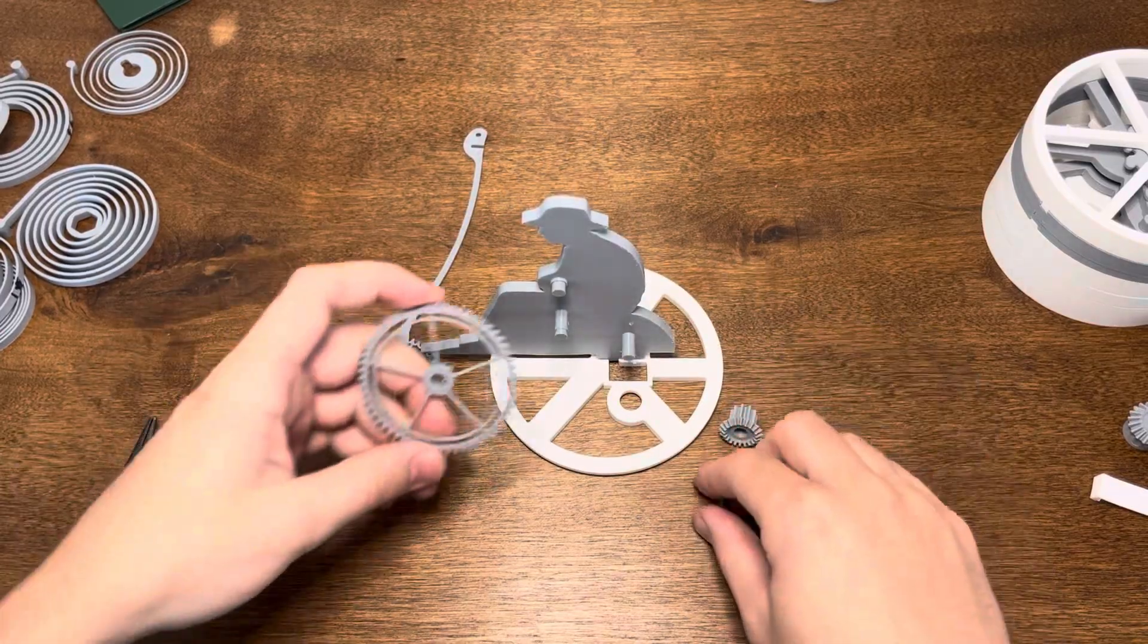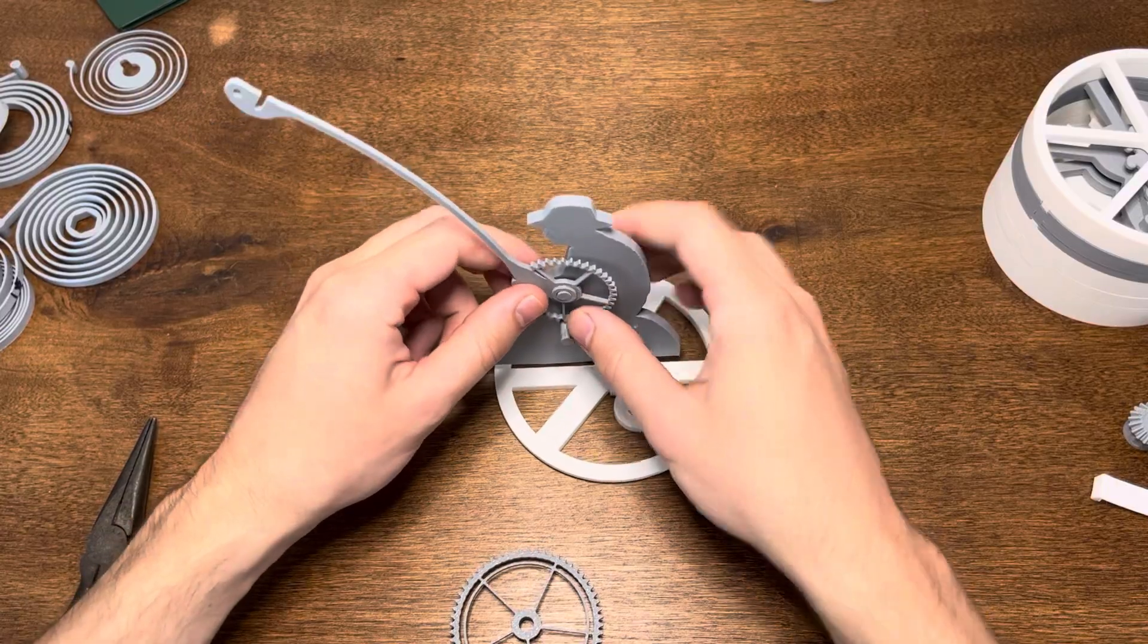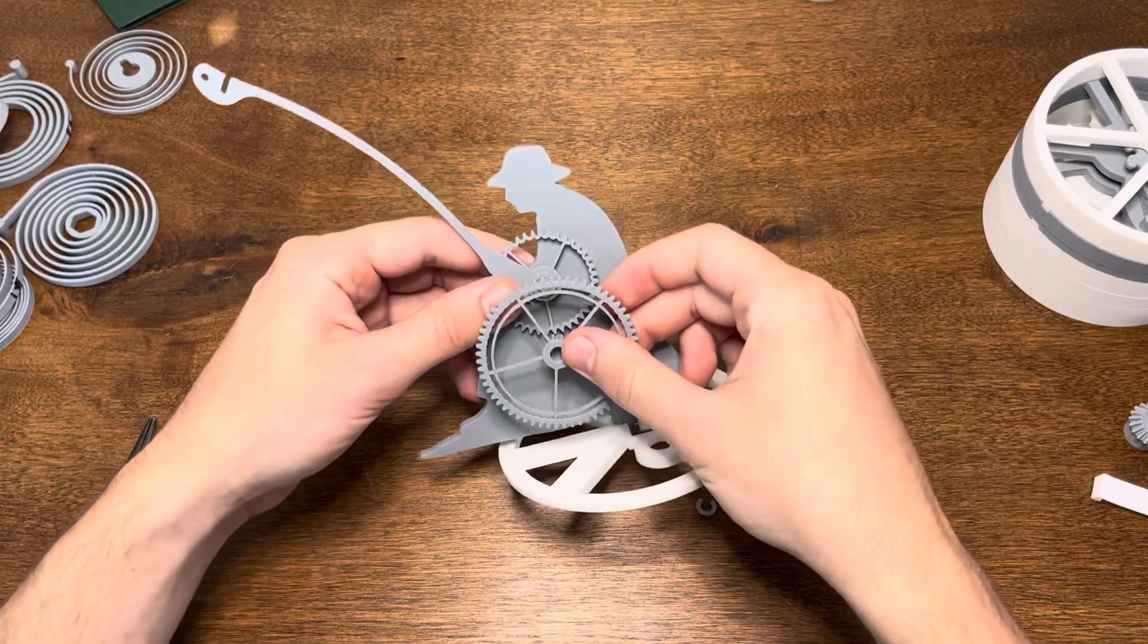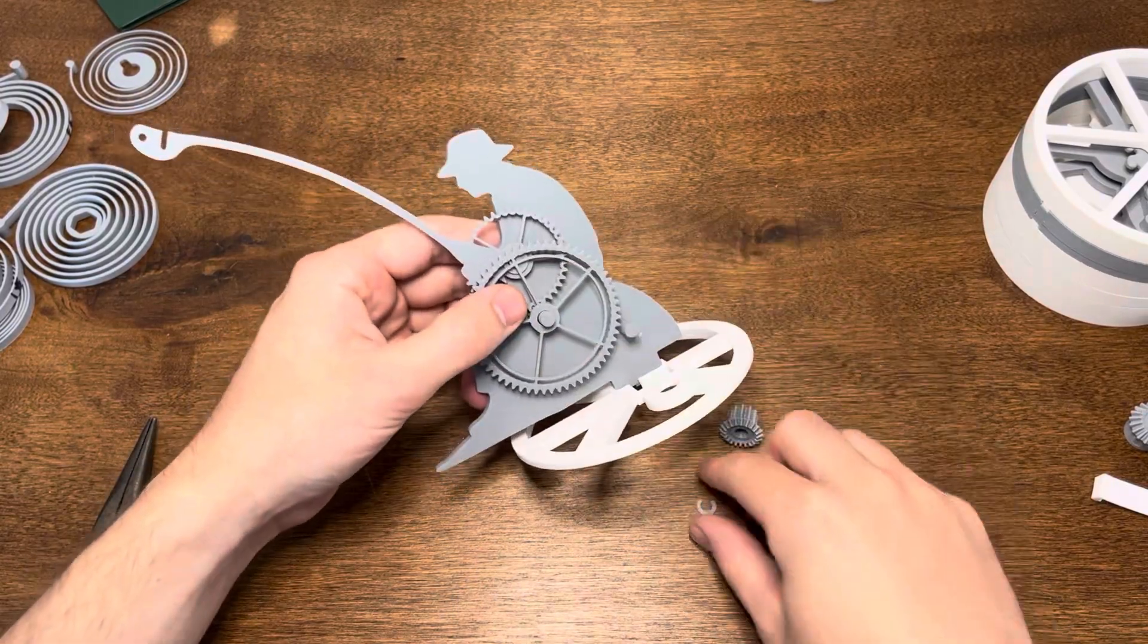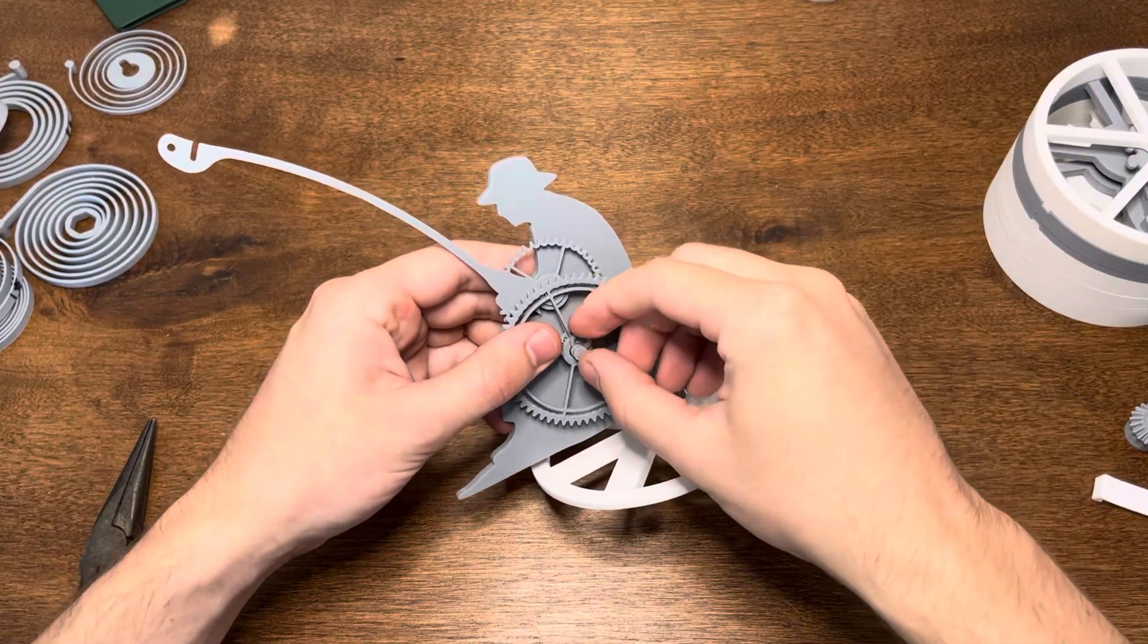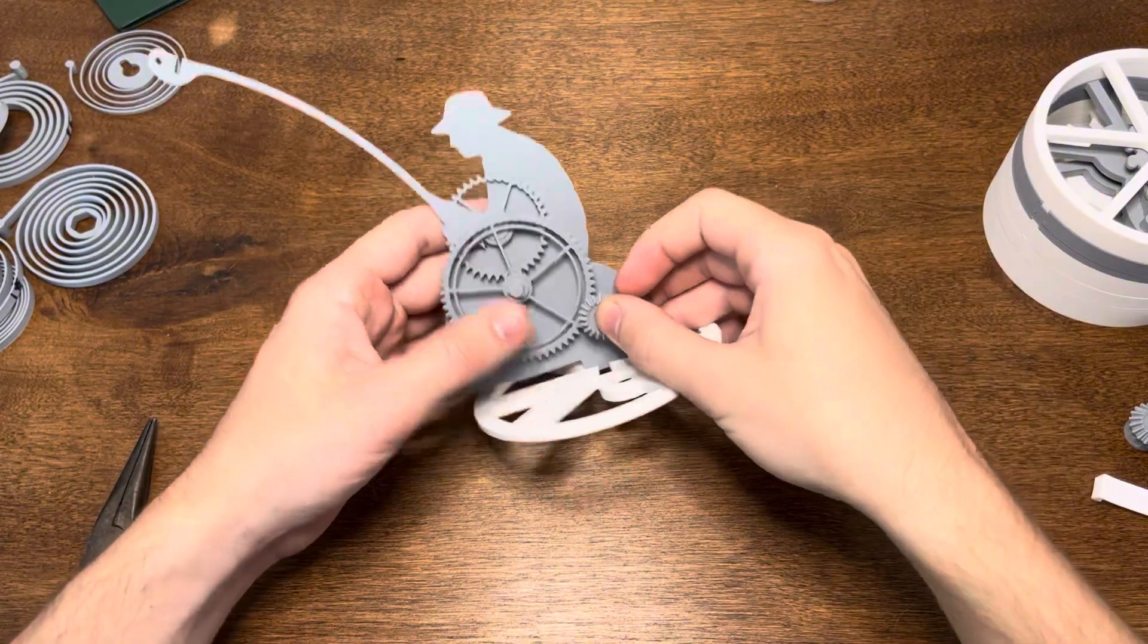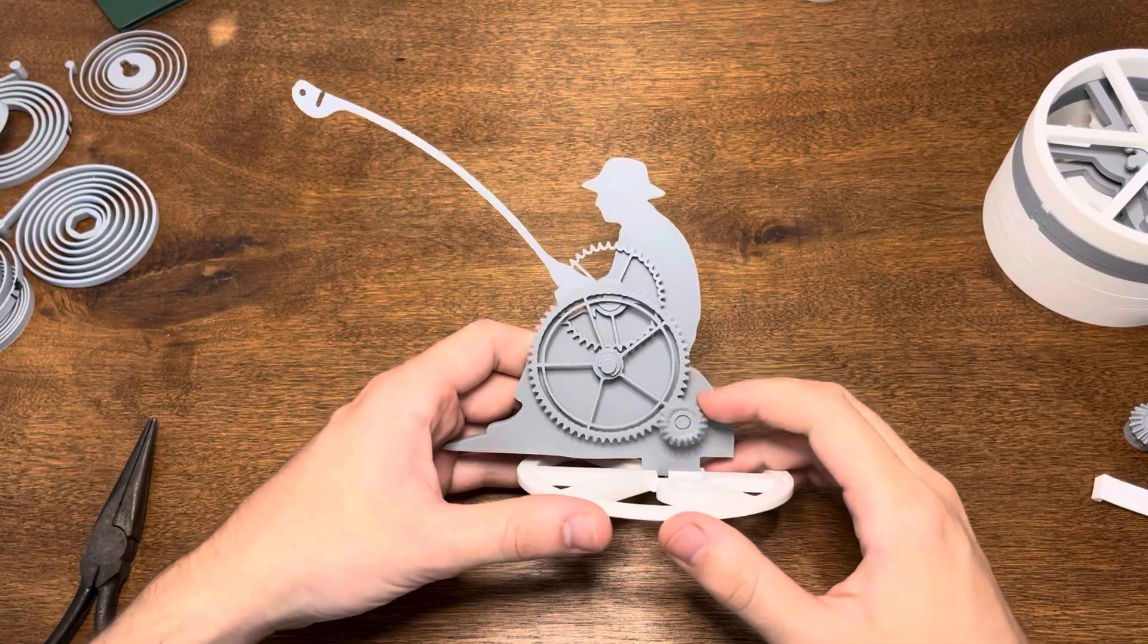So you're going to want to make sure to start off with the fishing rod. First snap that into place and then you'll put the largest gear on over top of it. And this is a retention clip. You can just snap that into the groove on the pivot point for that larger gear and then you'll snap on this pinion right there.